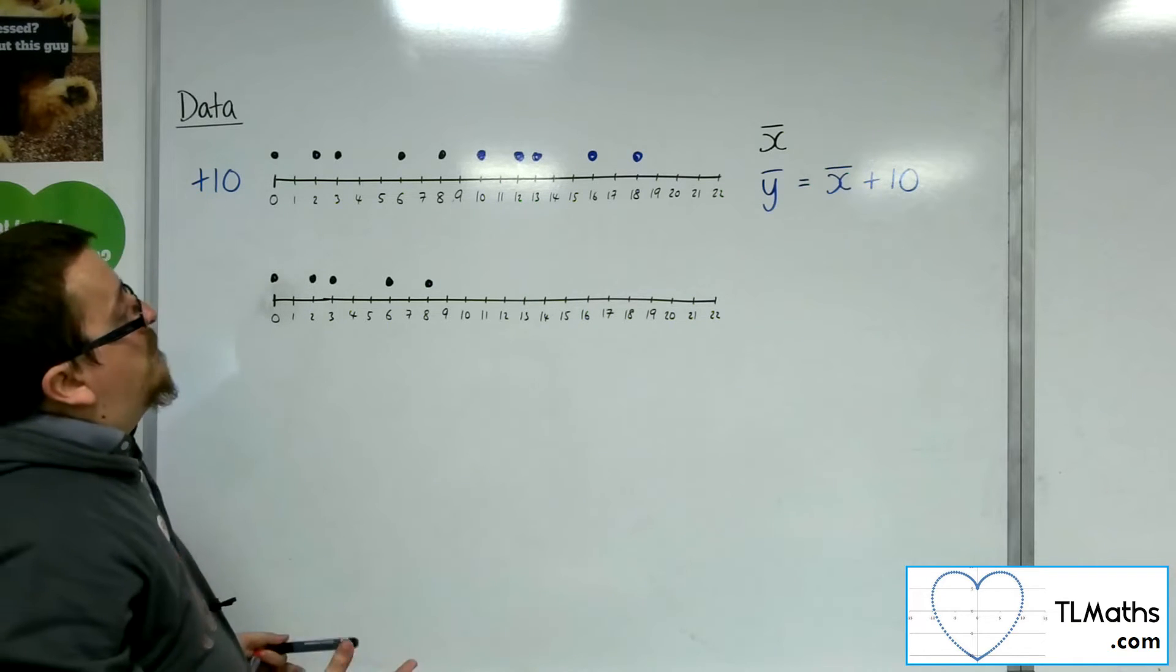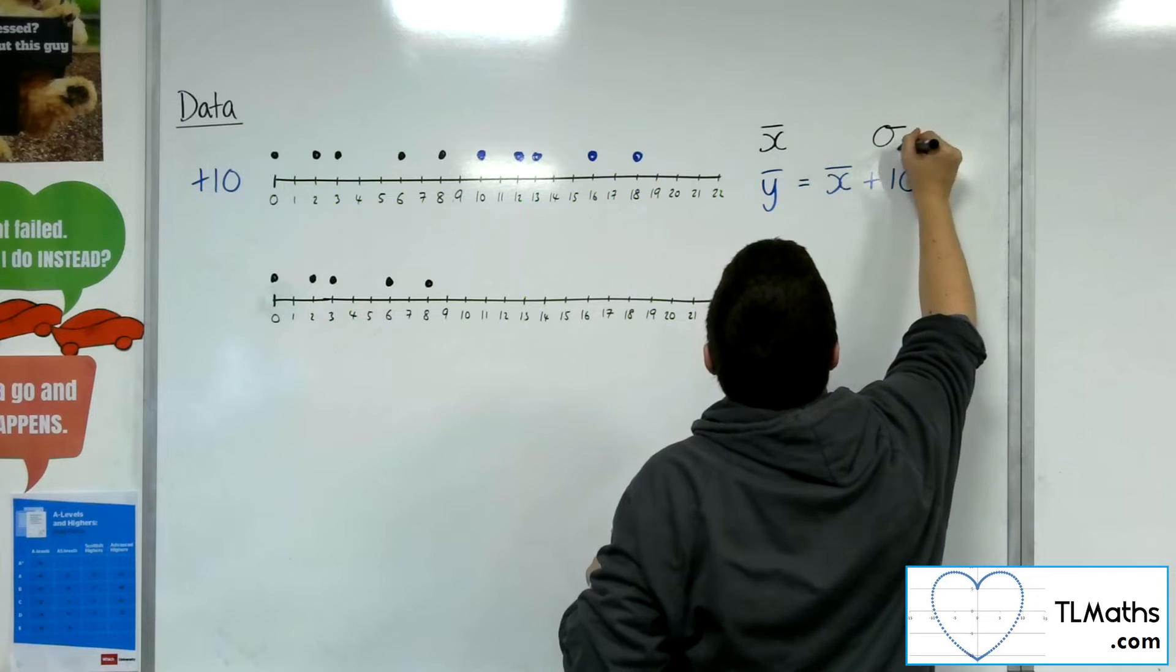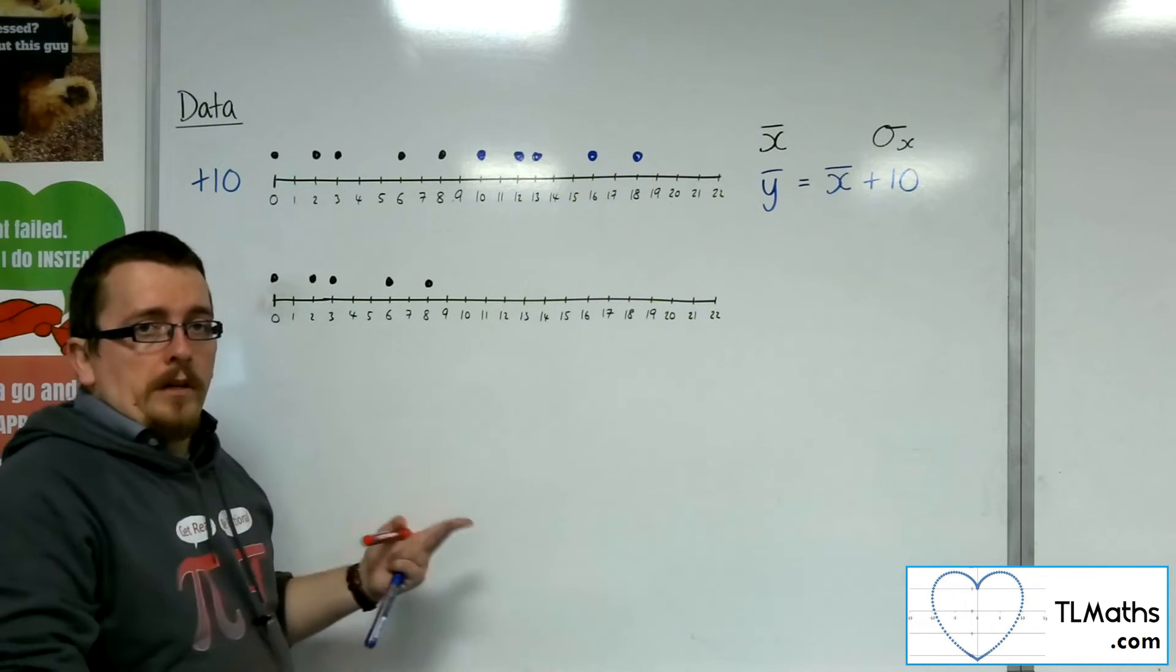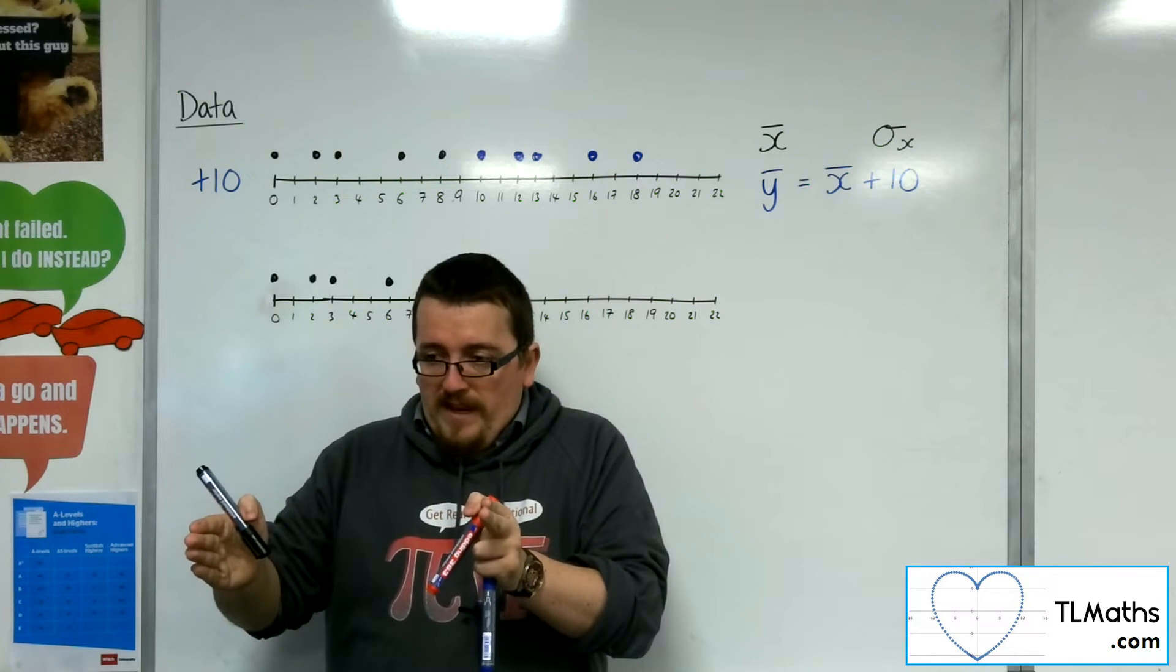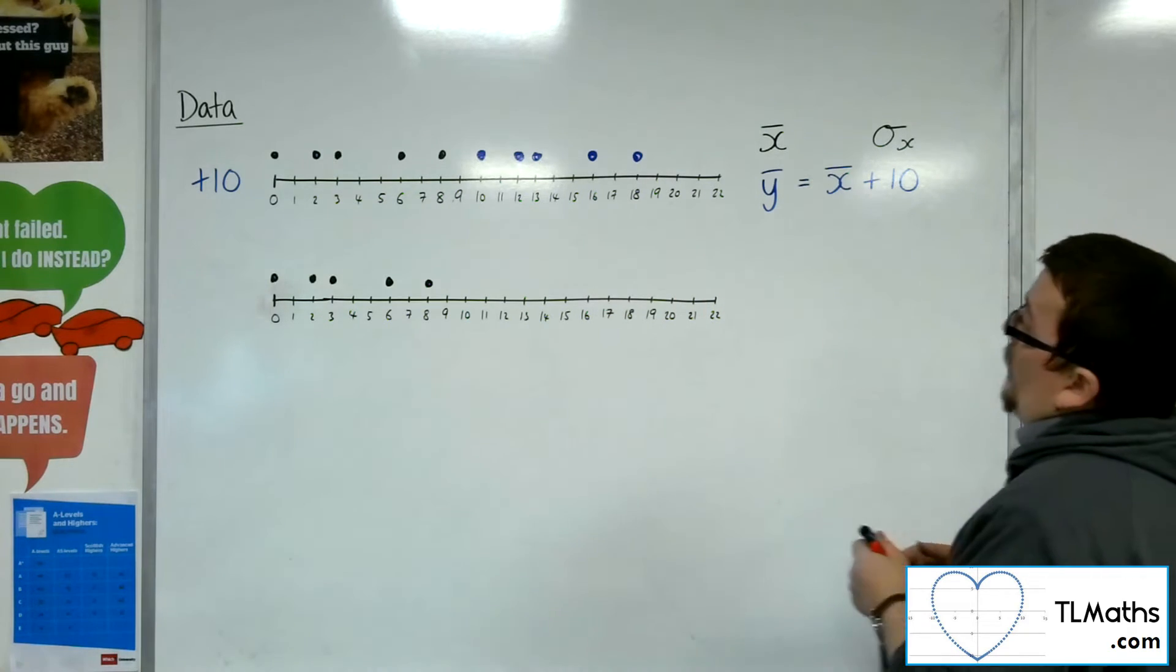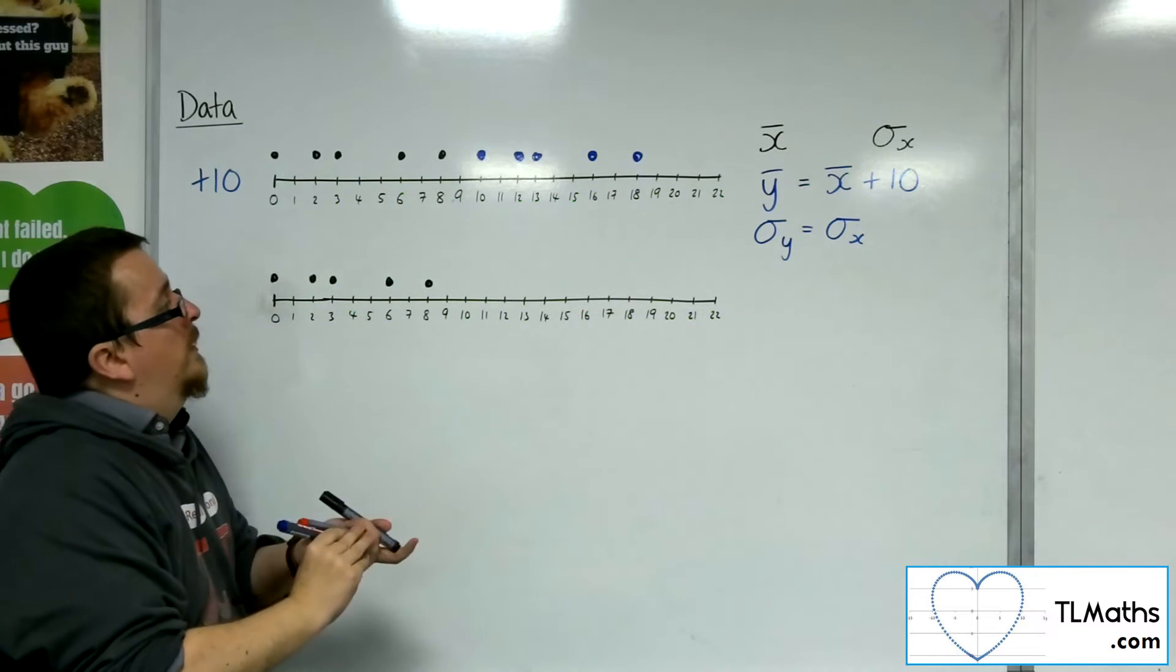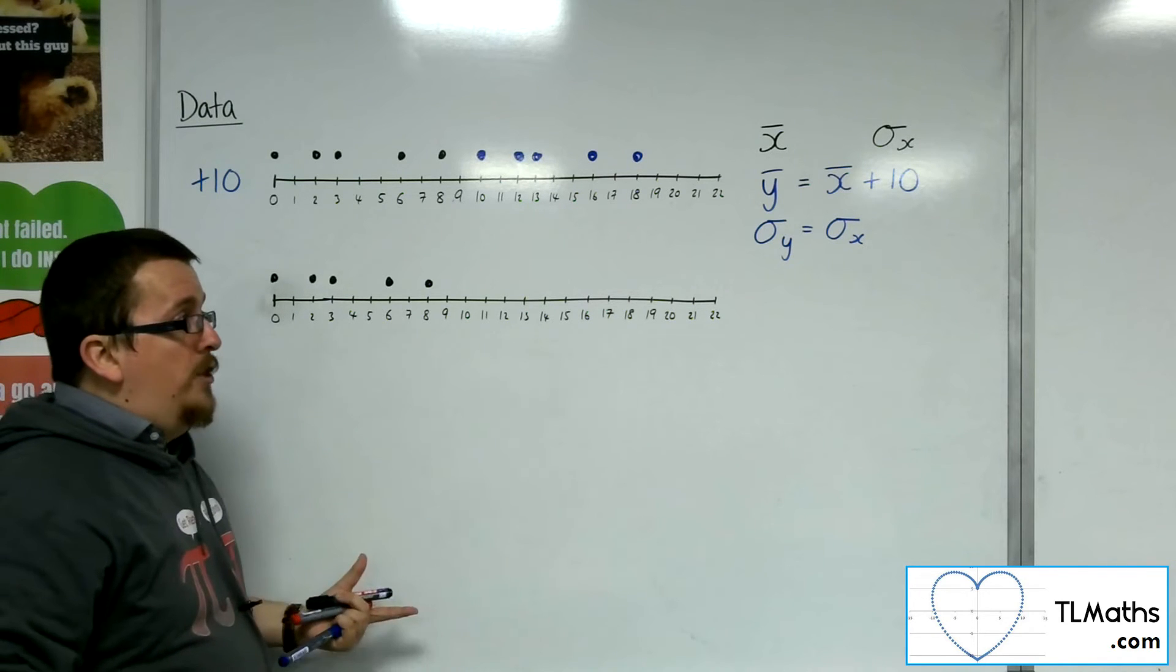So that's what would happen for the mean. What about the standard deviation? Well, the old set of data will have a standard deviation which will be given by sigma x. Well, after adding 10 to all of the data items, have they become more spread out? Well no, they haven't got any more spread out. They haven't squashed inwards. They haven't gone outwards. So that set of data has just moved and is still precisely the same spread. So in actual fact, the standard deviation won't have changed. So for this example, the new standard deviation will just be precisely the same as the old one. So that's what would happen if I just add or subtract a certain amount to my data. The mean will change, but the standard deviation won't.